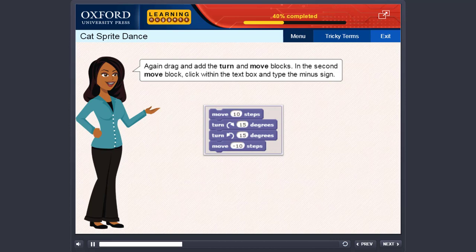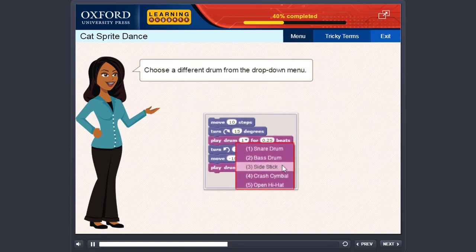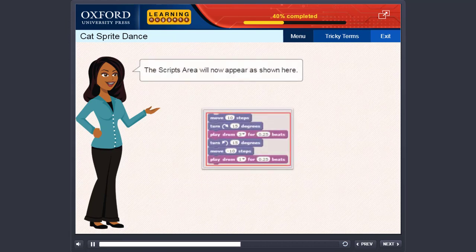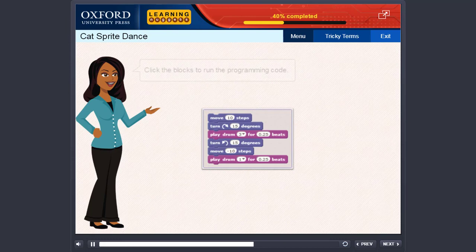In the second Move block, click within the text box and type the minus sign. Select the Sound block category. Drag the Play Drum block and snap it at a proper position. Choose a different drum from the drop-down menu. The Scripts area will now appear as shown here.